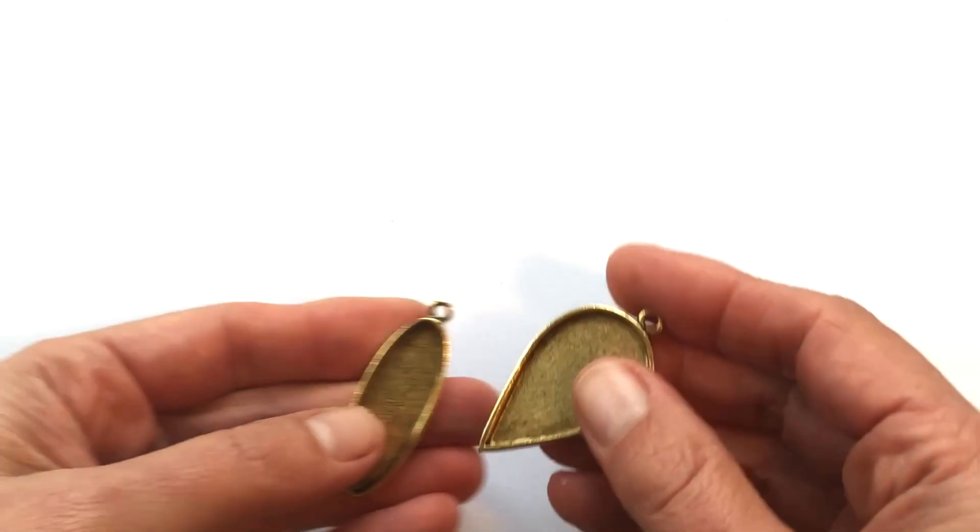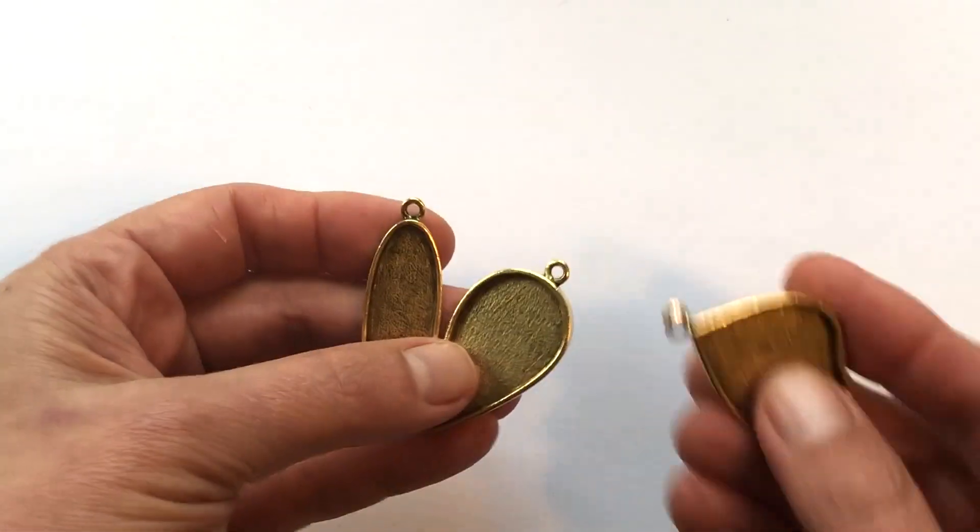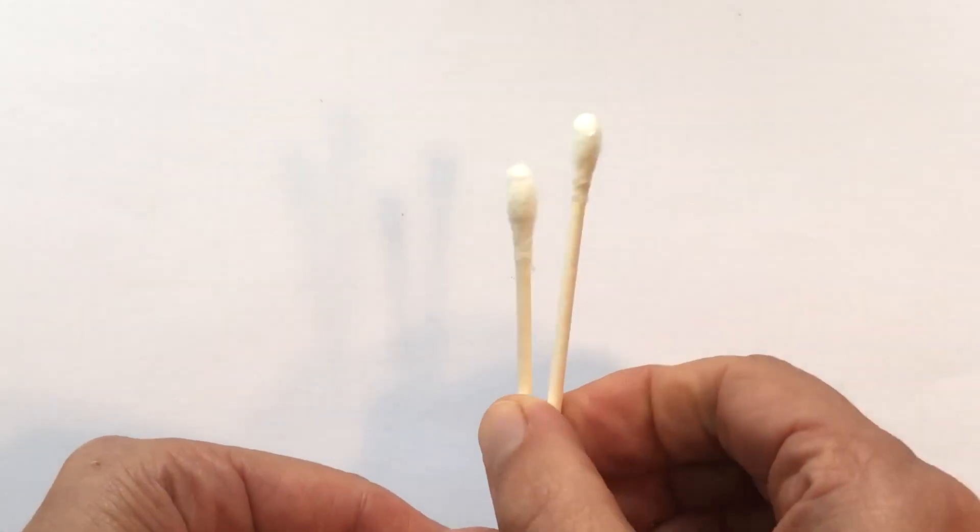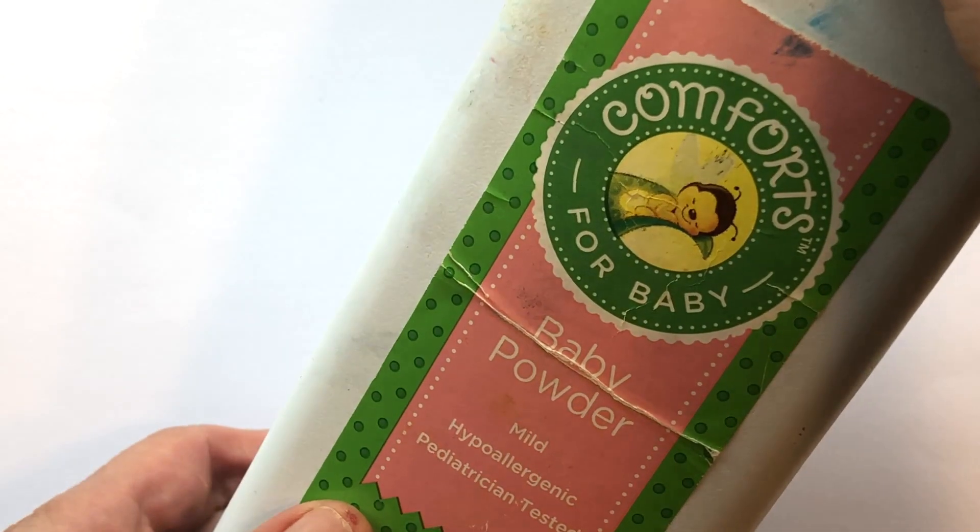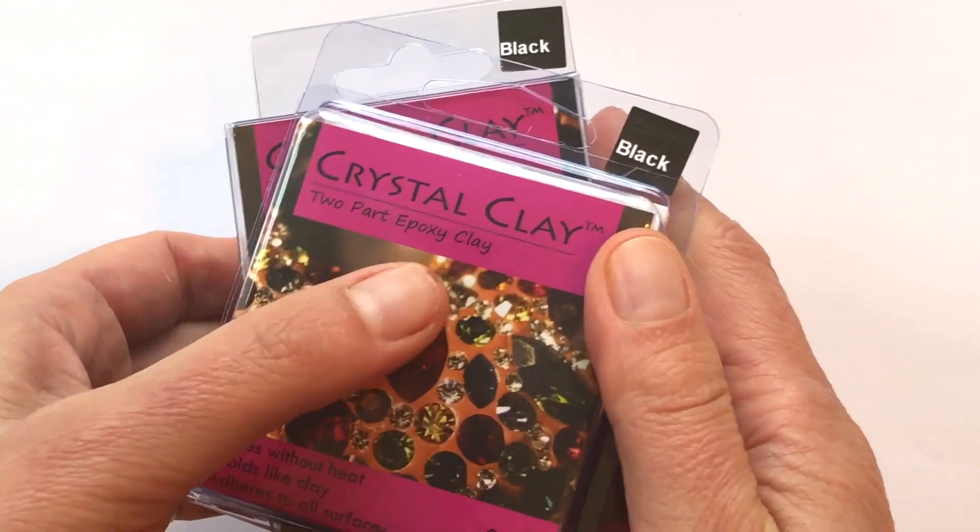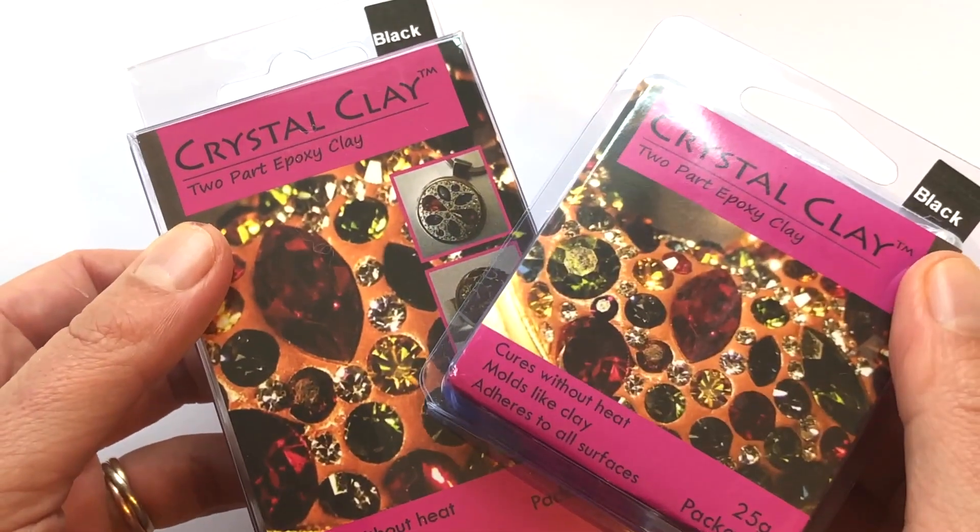For this video you will need some Nunn design bezels in a variety of different shapes and sizes. You'll also need rubbing alcohol to clean the bezels prior to putting the clay in, along with a little cup and a couple of q-tips. You'll also want to have a little bit of baby powder to put the gloves on and off easily, and then some wet wipes. And the star of the show is this product Crystal Clay, a two-part epoxy clay that comes in two different sizes.